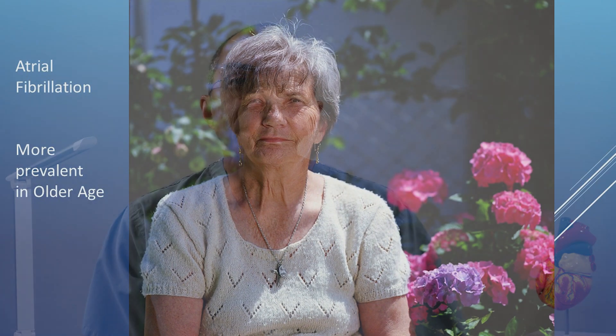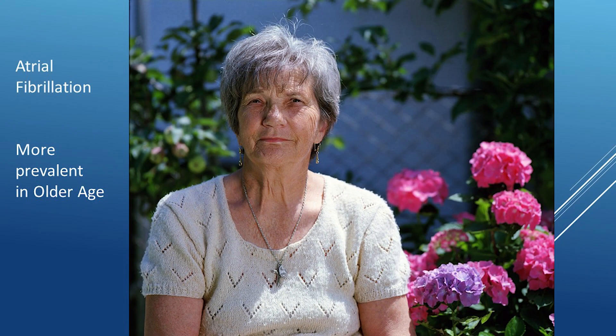So what is the prevalence of atrial fibrillation? Atrial fibrillation tends to be more prevalent in older age. The overall prevalence across all age groups is about 1%, however the prevalence is 0.1% among adults less than 55 years of age, but increases sharply to about 10% in those 80 years of age and older.